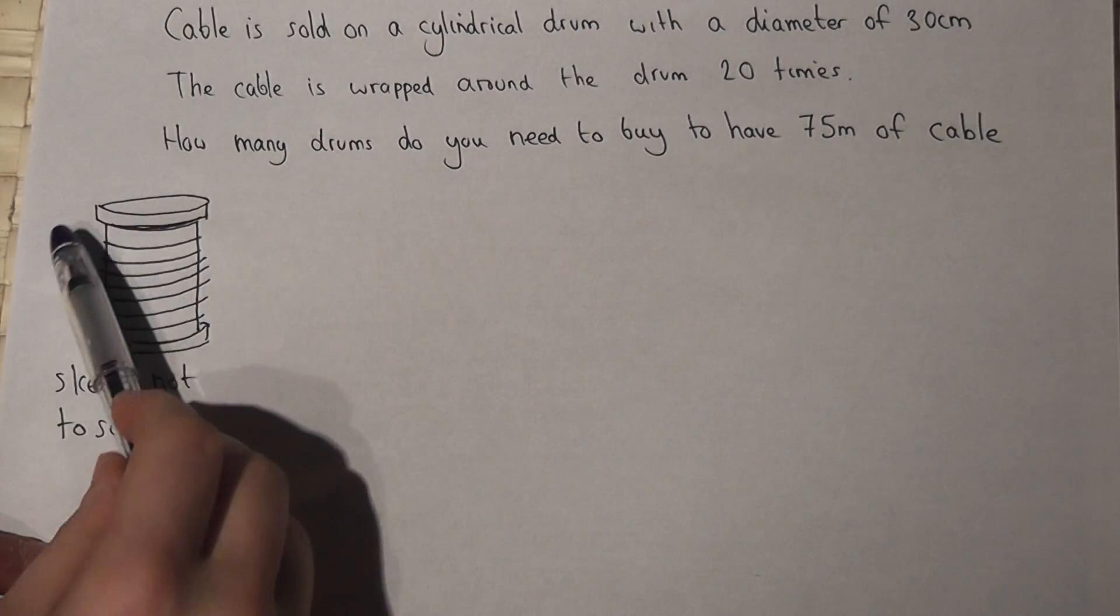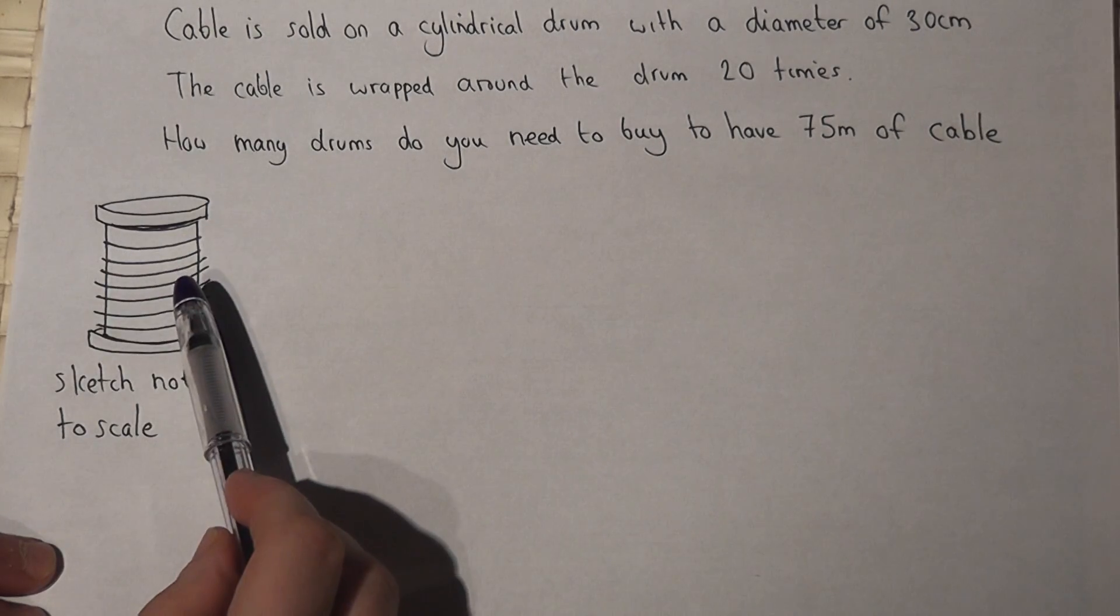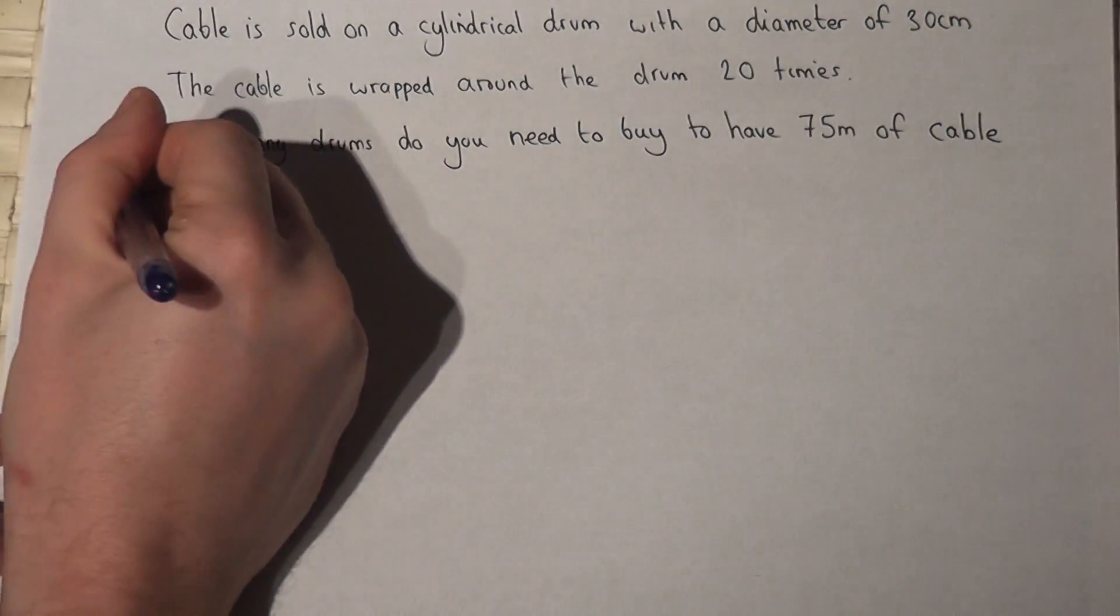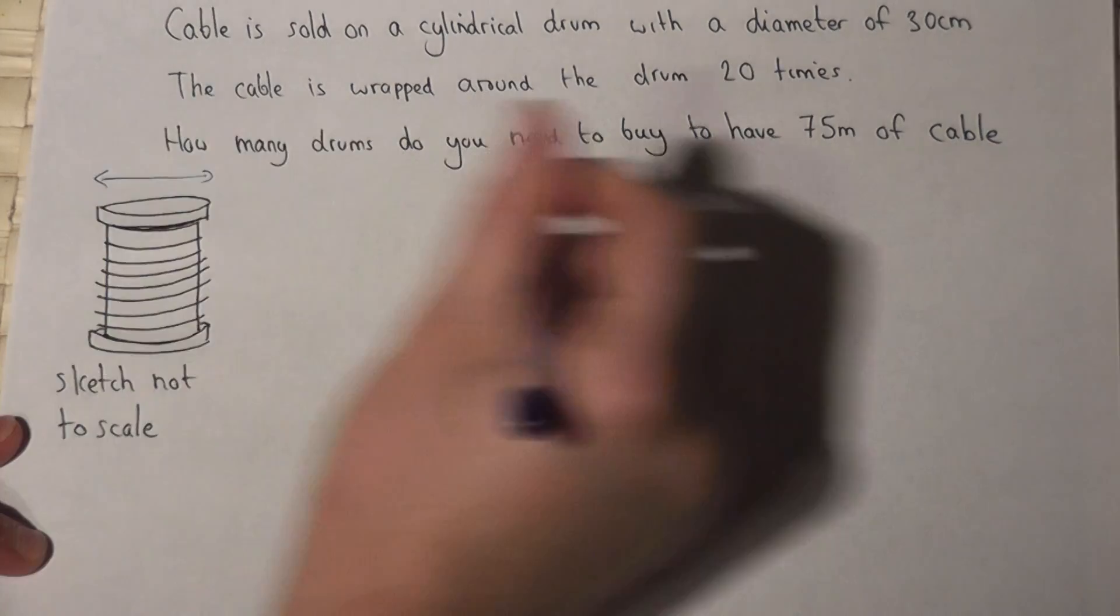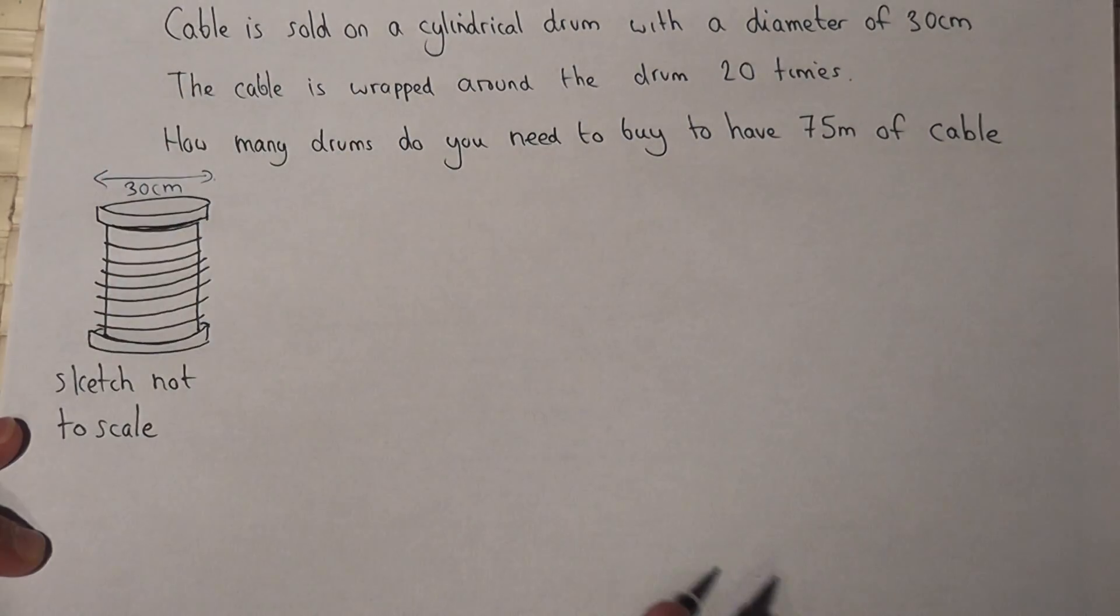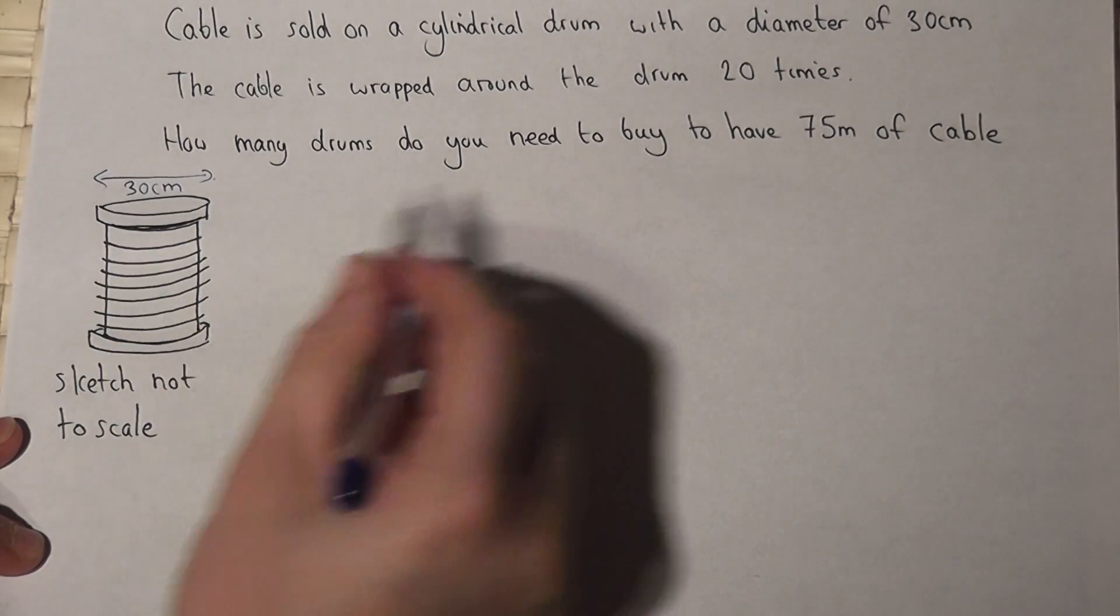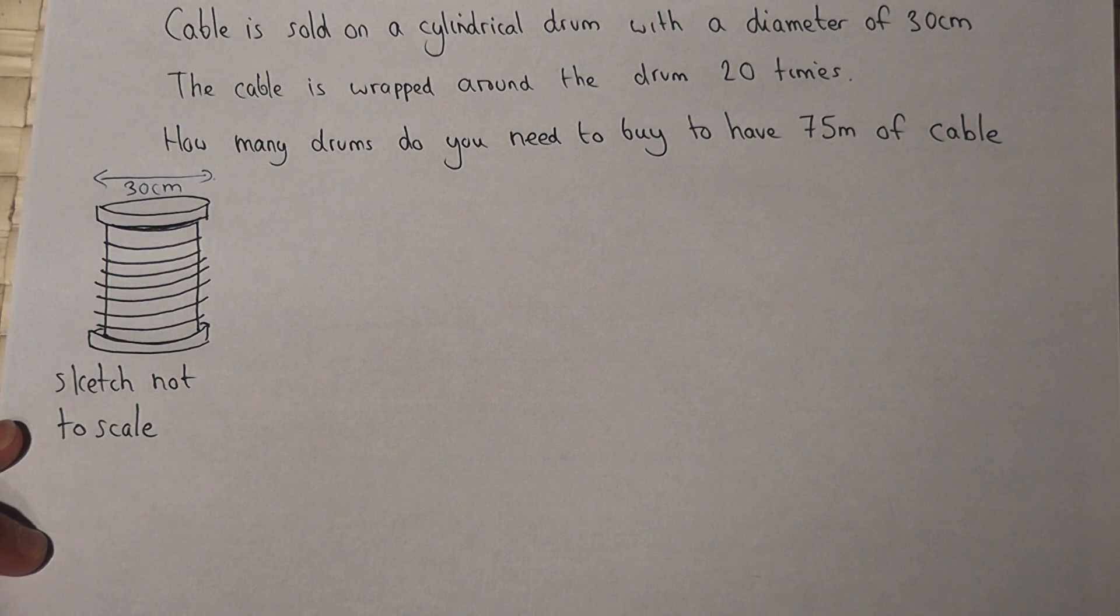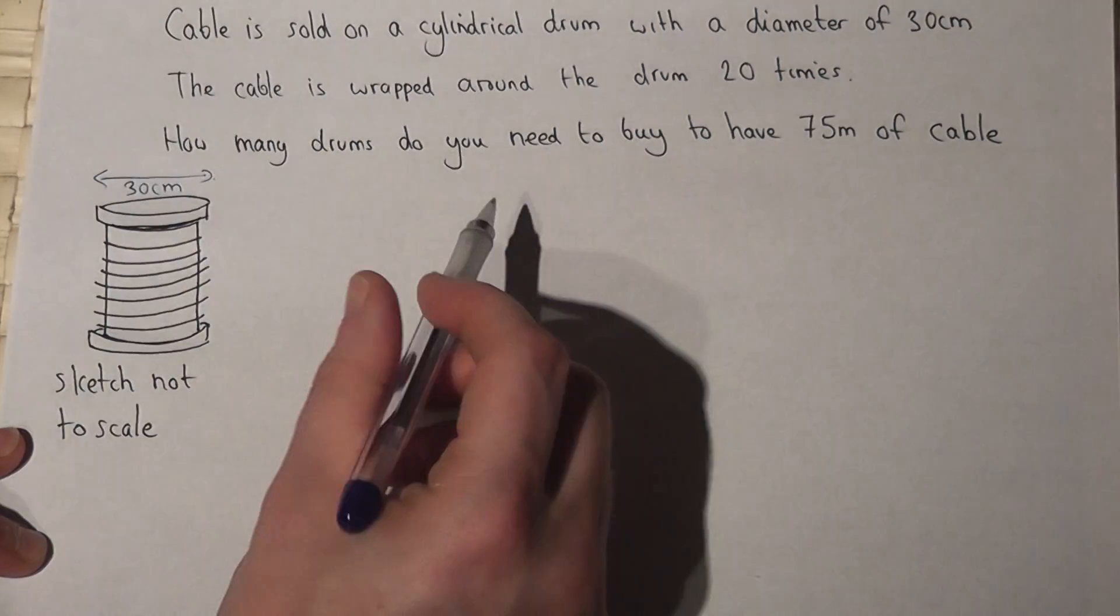In this question, we're told that cable is sold on a cylindrical drum which has a diameter of 30 centimeters, and this cable is wrapped around the drum 20 times. You want to buy enough drums to do a job which involves 75 meters of cable.